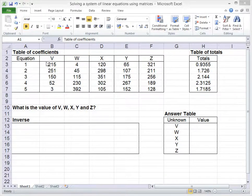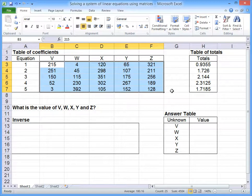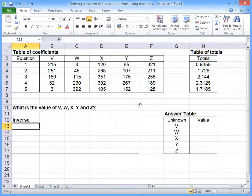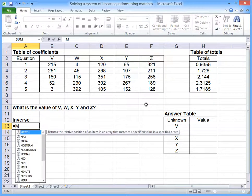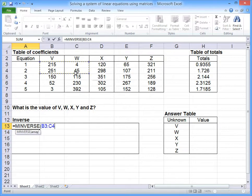Here we are in Excel, and here's a table of all the coefficients that we need for those five equations, and here's a table of all those totals of those five equations. The first step is to use MINVERSE, we open brackets, select that table of coefficients, press enter.